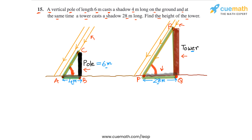Why are they similar? Because angle A equals angle P, since the shadow is being measured at the same time. Also, angle ABC is 90° because the pole is vertical, and similarly the tower is vertical, so angle PQR is also 90°. By the AA similarity criterion, the two triangles are similar, and therefore their sides must be proportional — from which we can find the height of the tower.